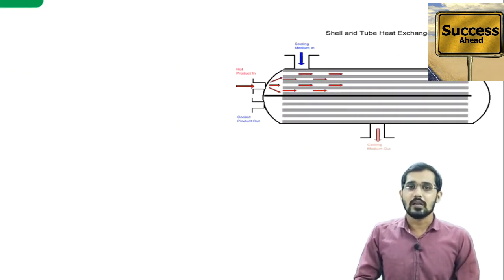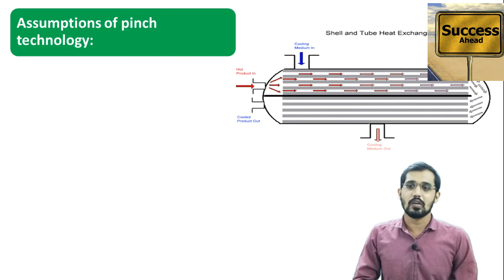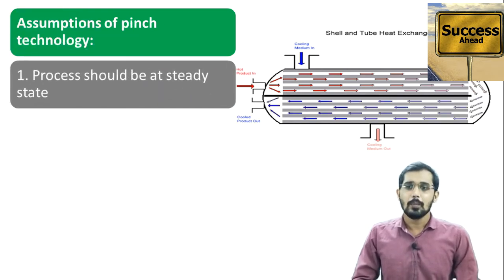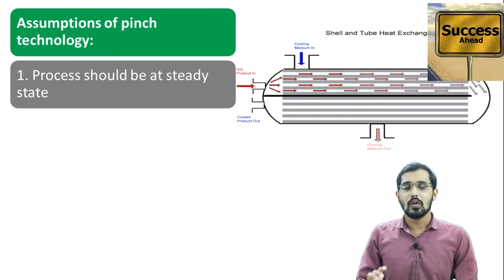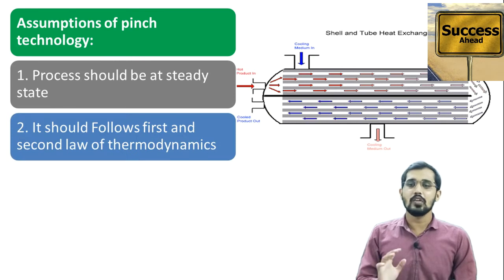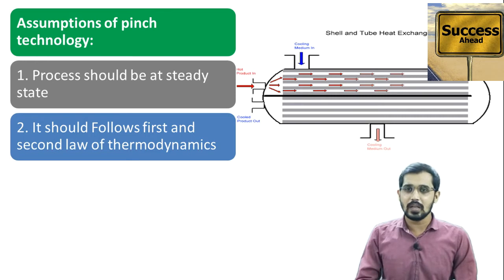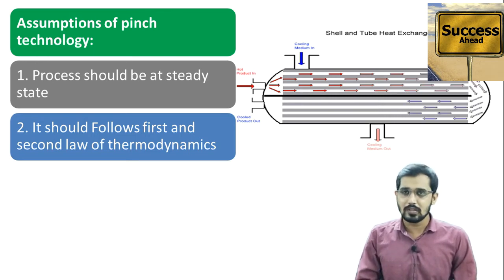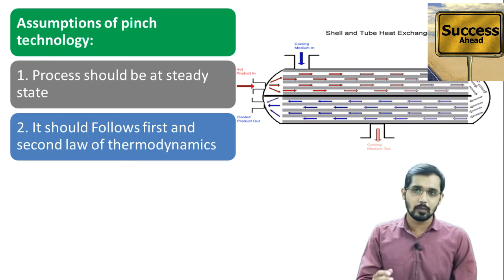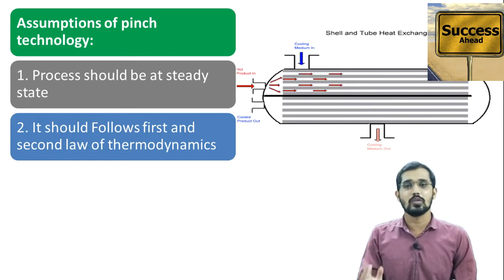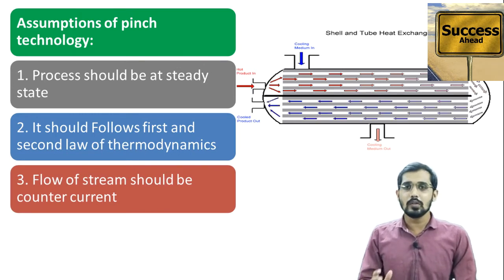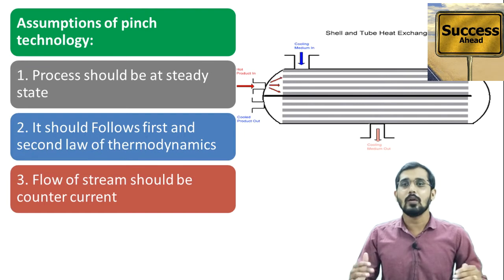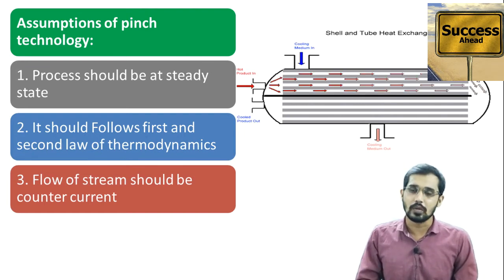Now we will see the assumptions for pinch technology. The first assumption is that the process should be at steady state, meaning all parameters in process industries are not varying with time. It should follow the first and second laws of thermodynamics: energy is neither created nor destroyed per the first law, and heat always flows from higher temperature to lower temperature per the second law. Finally, the flow should be in counter-current mode, meaning all streams flow in opposite directions to each other.